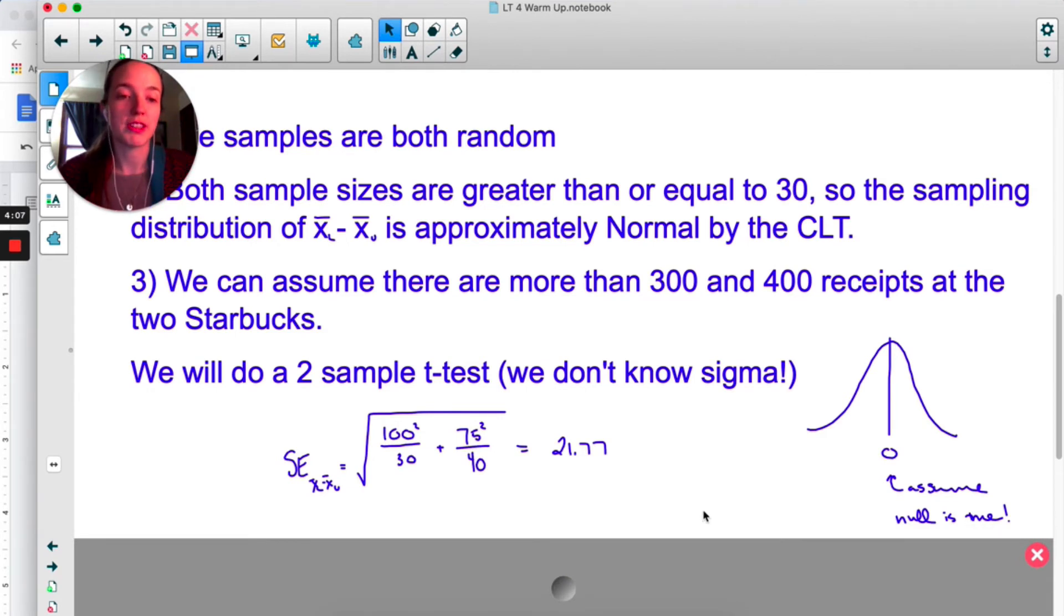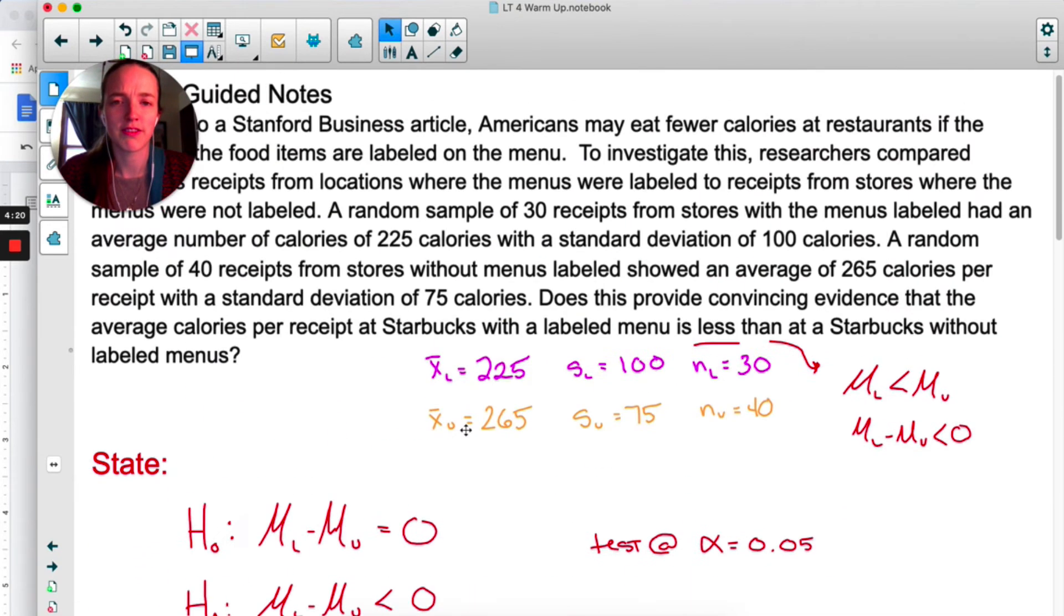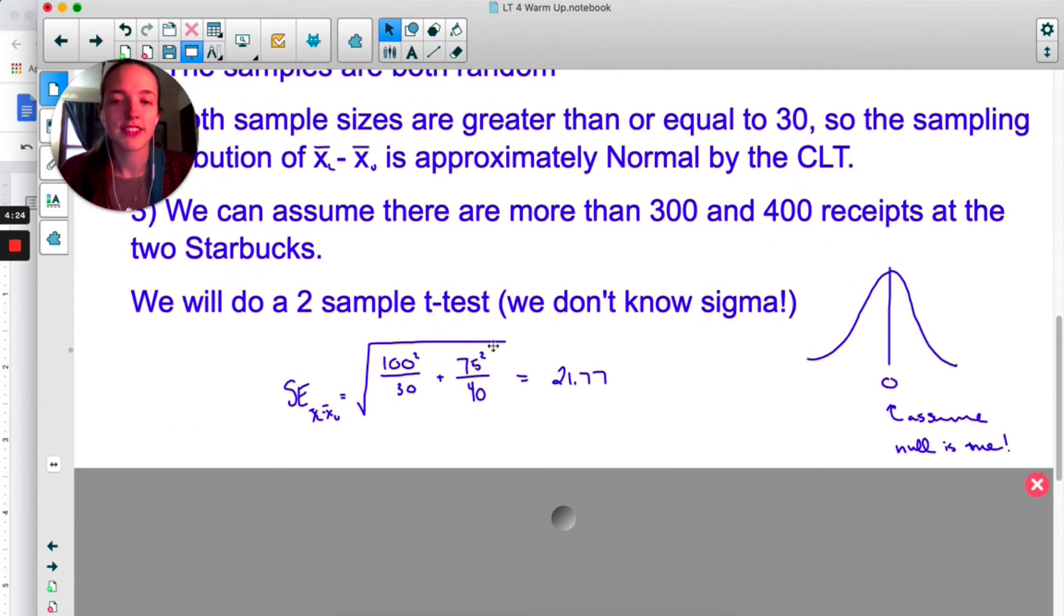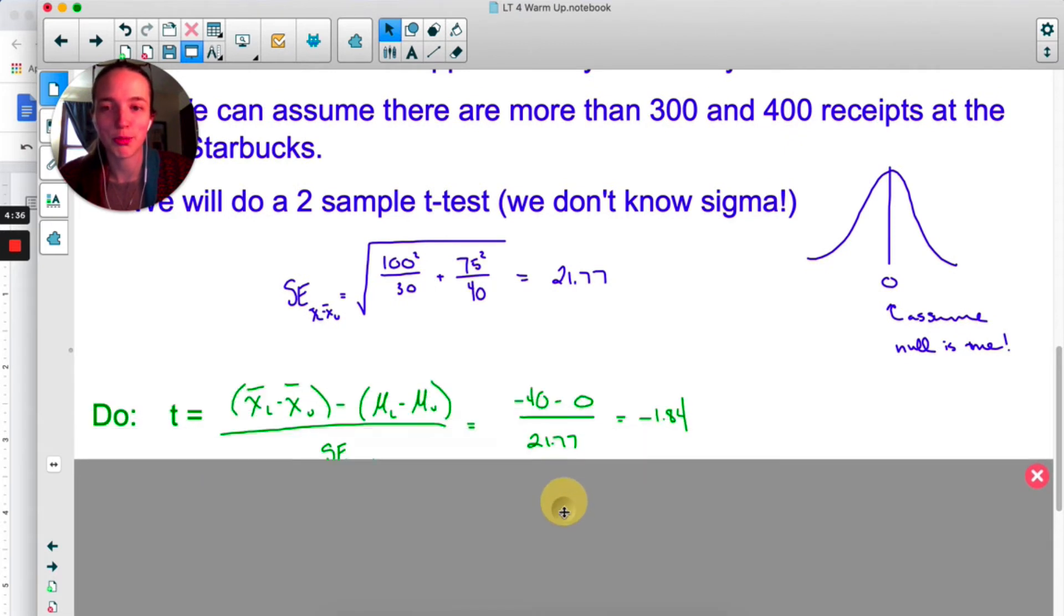You can see the start of my distribution over here. With any significance test, we're assuming that the null is true, so the center of our distribution is zero. And then I'm calculating the standard error. Because I don't know the true standard deviation of the populations, I'm using 175—those are the numbers—and this is just straight from the formula sheet. I get 21.77 for the standard error.